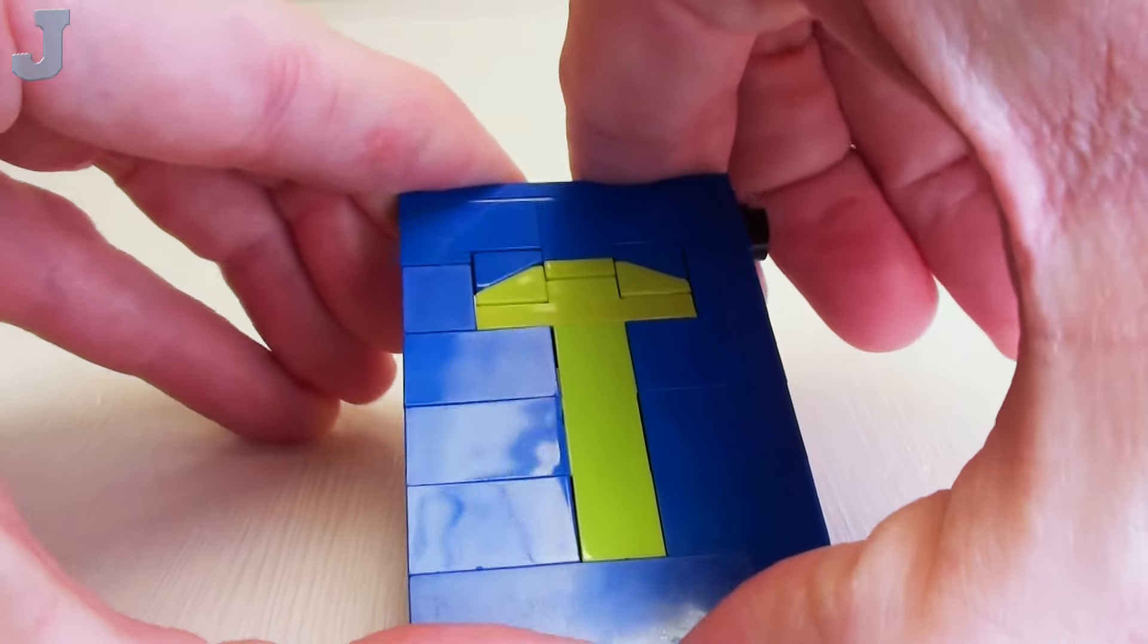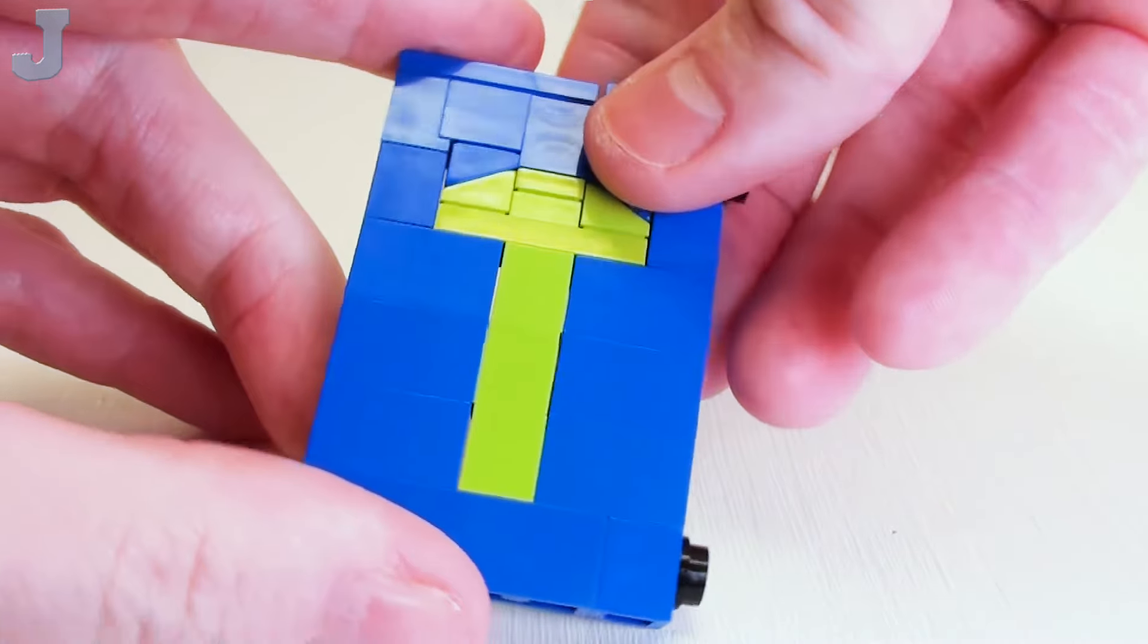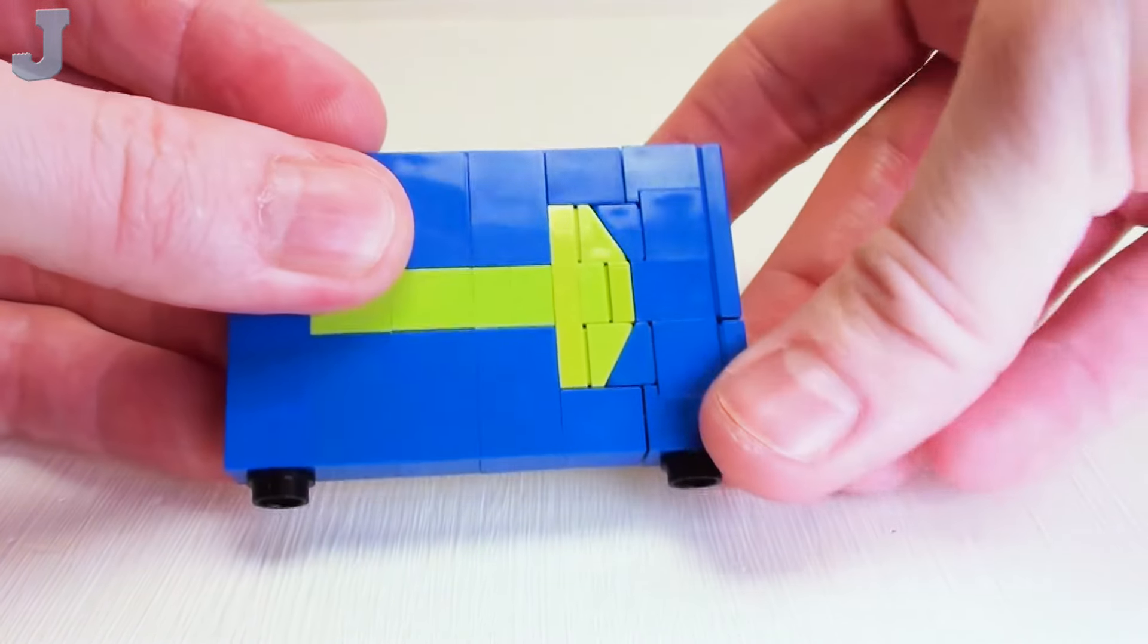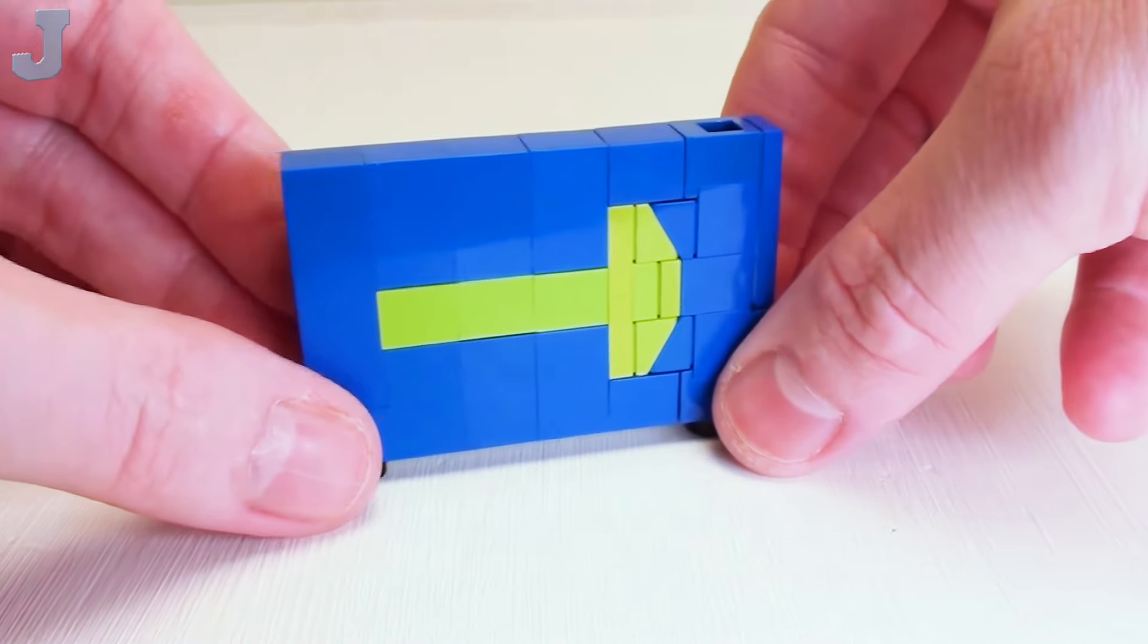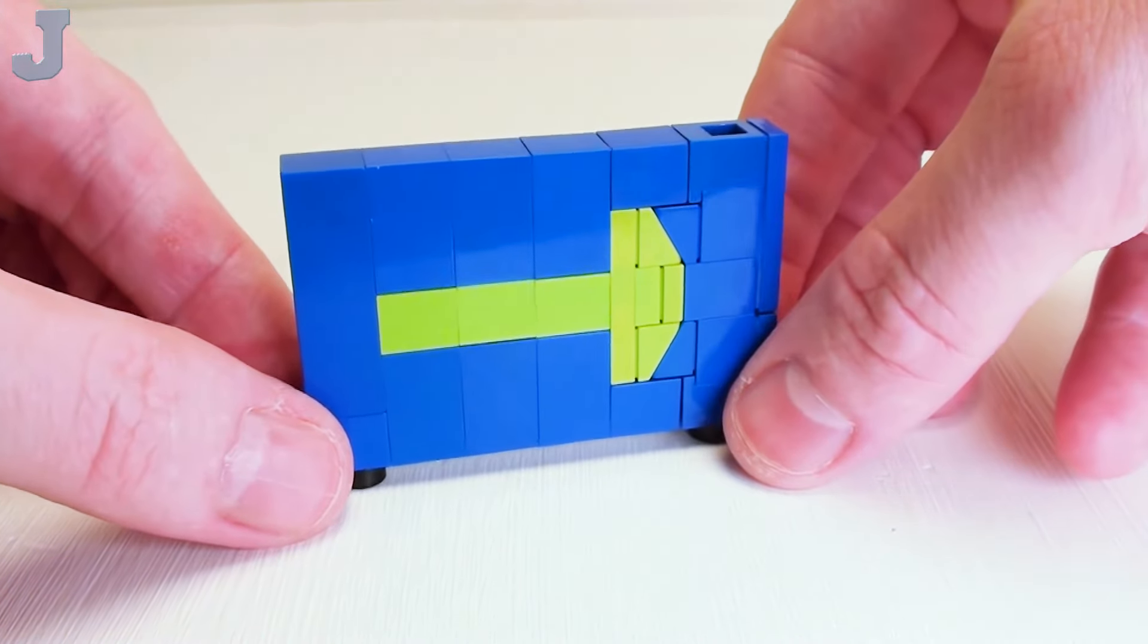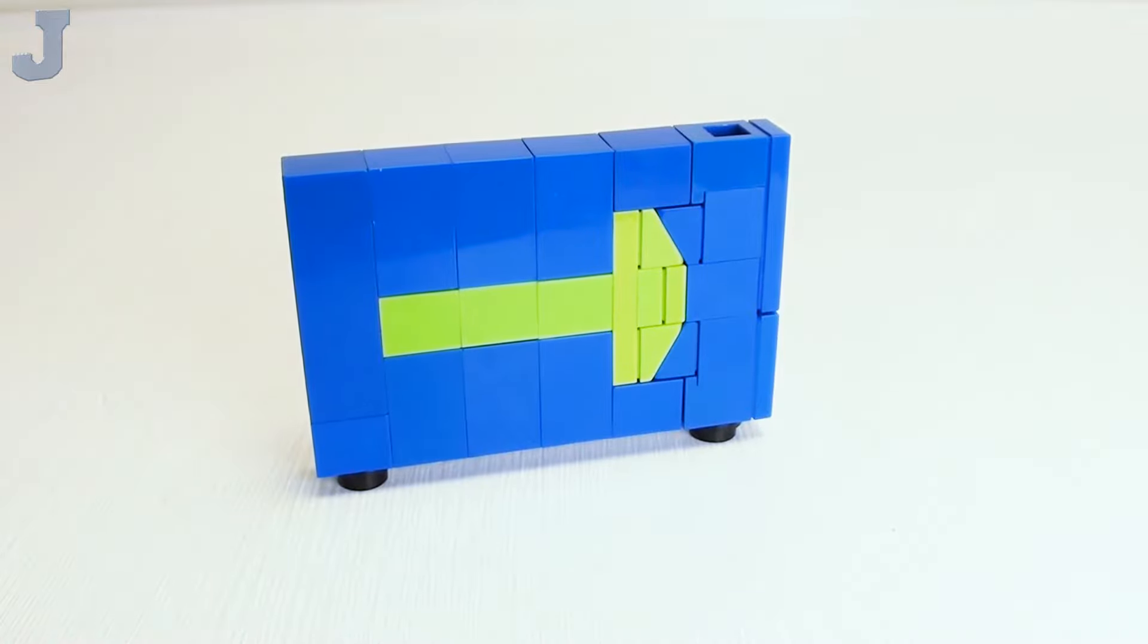You're going to have to really push that in there. Sometimes it may not want to cooperate or this tile may come loose. But that's pretty much essentially how to make an arrow sign.